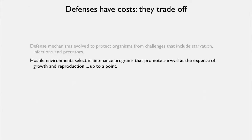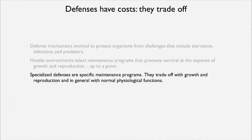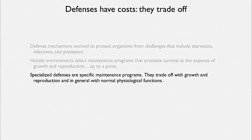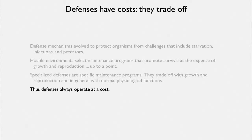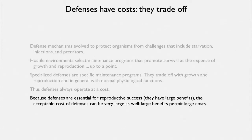Hostile environments will select maintenance programs, such as the immune system, that promote survival at the expense of growth and reproduction — but only up to a point. There will come a point where it's better to invest in reproducing than in defending. Specialized defenses are very specific maintenance programs, trading off with growth and reproduction and with normal physiological function. So defenses always operate at a cost. Because some defenses are essential for reproductive success and have very large benefits, the acceptable cost of such a defense can be very large. Large benefits permit large costs, so if something goes haywire and those costs are revealed, you can have a very serious situation.